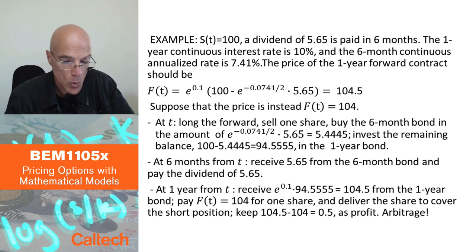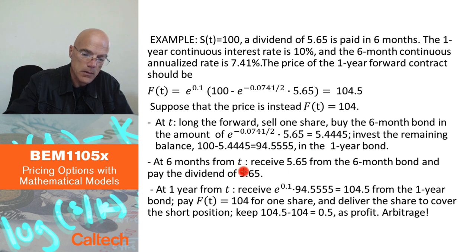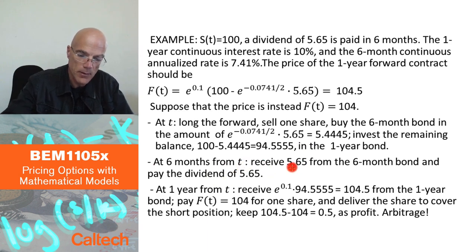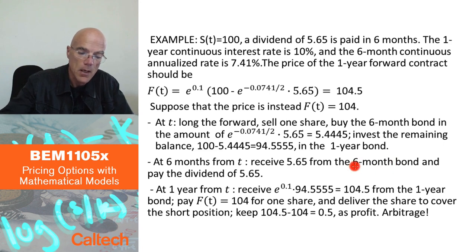In six months, I will have to pay the dividend of $5.65, but I will receive $5.65 from my position in the six-month bond. That's exactly how I constructed that position — to have $5.65 in six months.